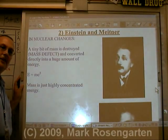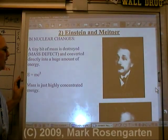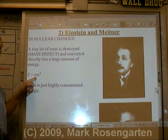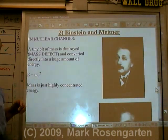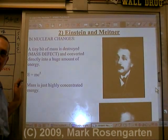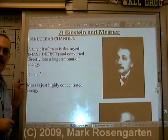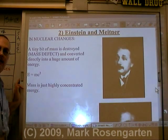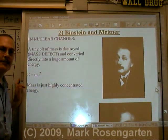Albert Einstein, that incredible genius, discovered that there's a relationship between mass and energy — the fact that mass is nothing more than super concentrated energy. Mass times the speed of light squared, a very big number, will give you the amount of energy contained in that mass.